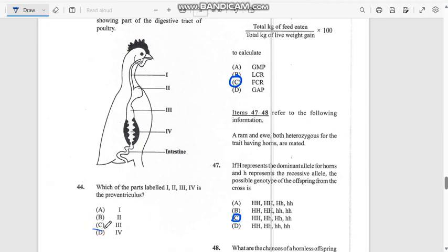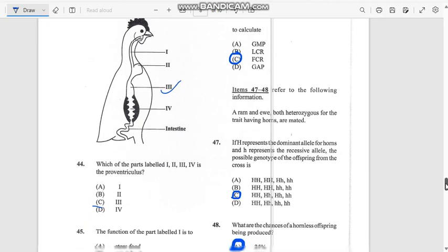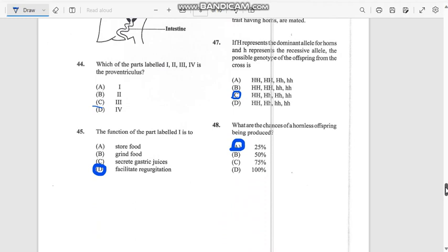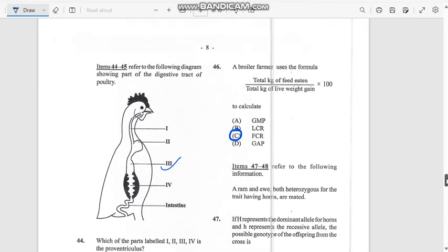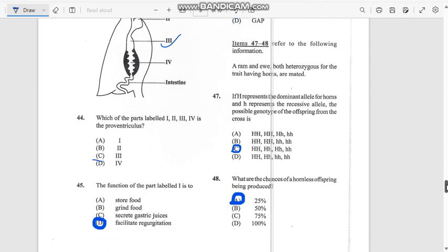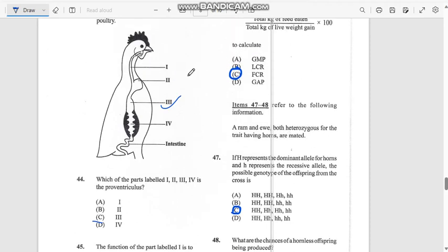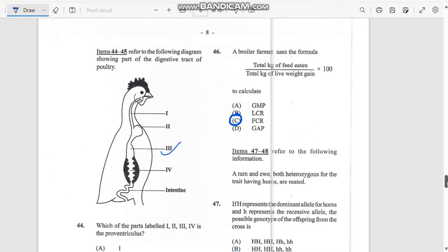Number 45: The function of part labeled I is to facilitate regurgitation. This is the tube they use to regurgitate the food. When the bird or broiler swallows the food, they regurgitate it, carry it up and through.